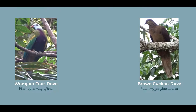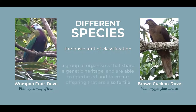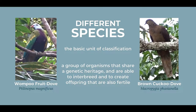Right now, we are looking at two different species. In biology, a species is the basic unit of classification — the basic taxonomic rank of an organism. In other words, a species is the most basic category in the system of taxonomy, although there are sometimes different subspecies that exist under one species. Another way to define a species is a group of organisms that share a genetic heritage, and are able to interbreed and to create offspring that are also fertile.